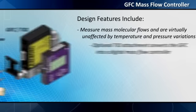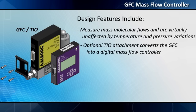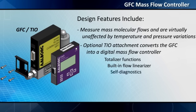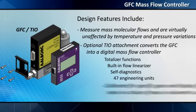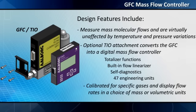The optional TIO attachment converts the GFC into a digital mass flow controller with totalizer functions, built-in flow linearizer, self-diagnostics, 47 engineering units, and other features. Mass flow controllers are calibrated for specific gases and display flow rates in a choice of mass or volumetric units.